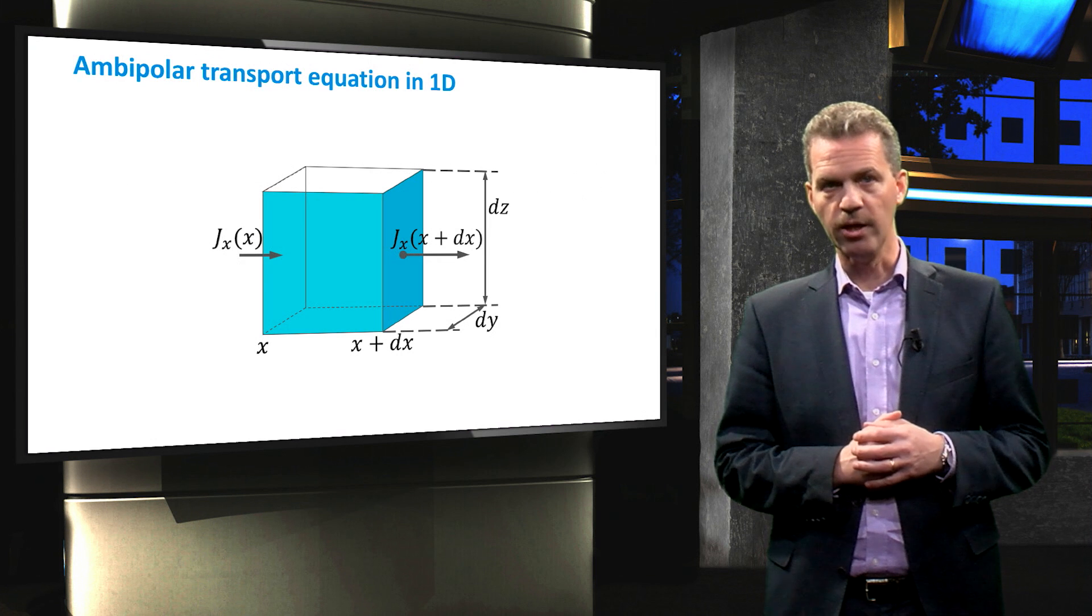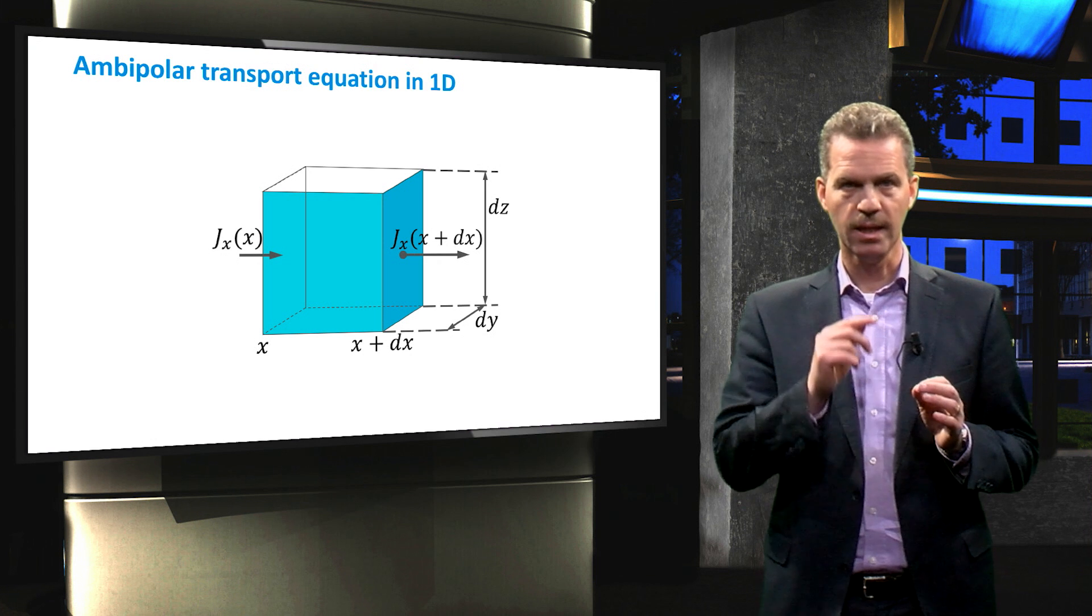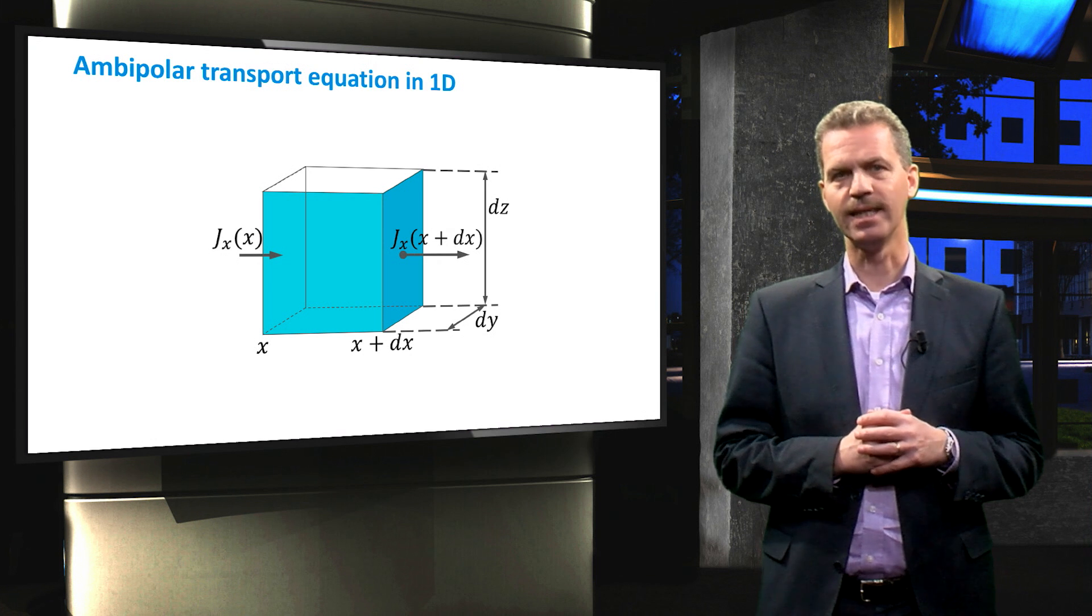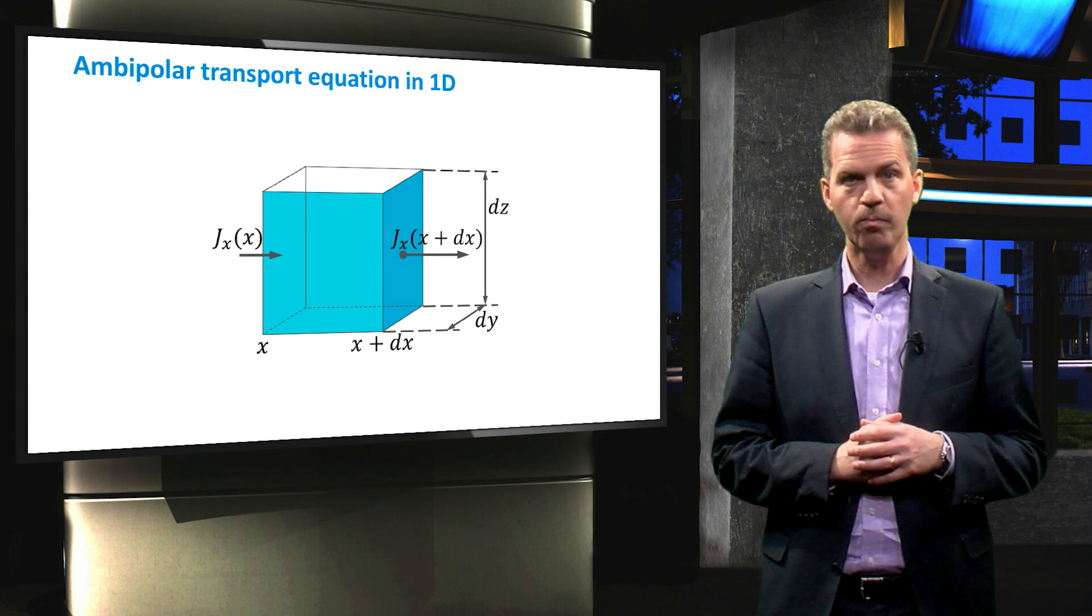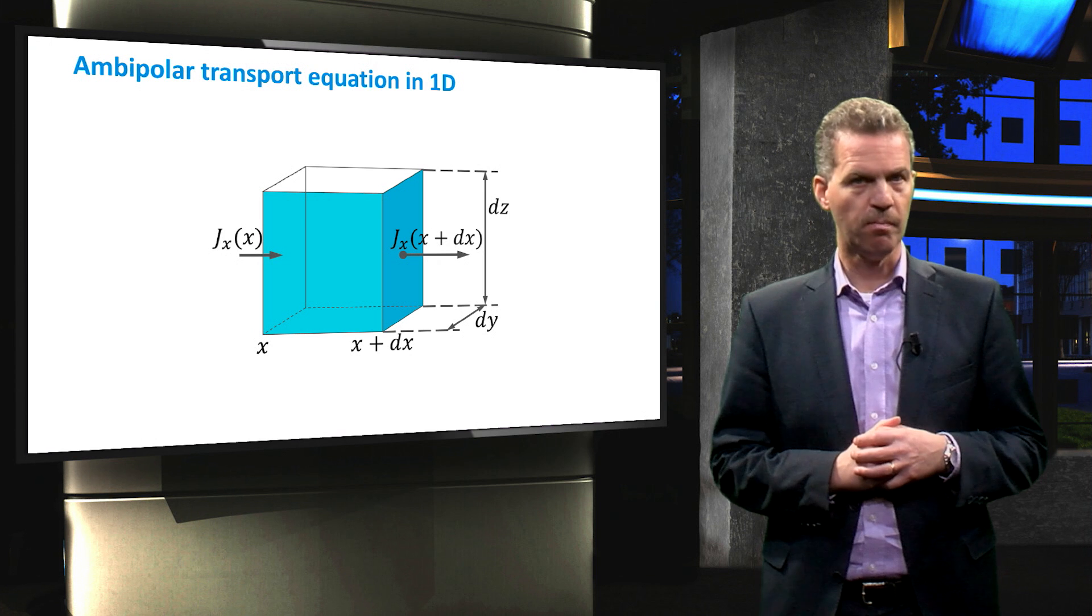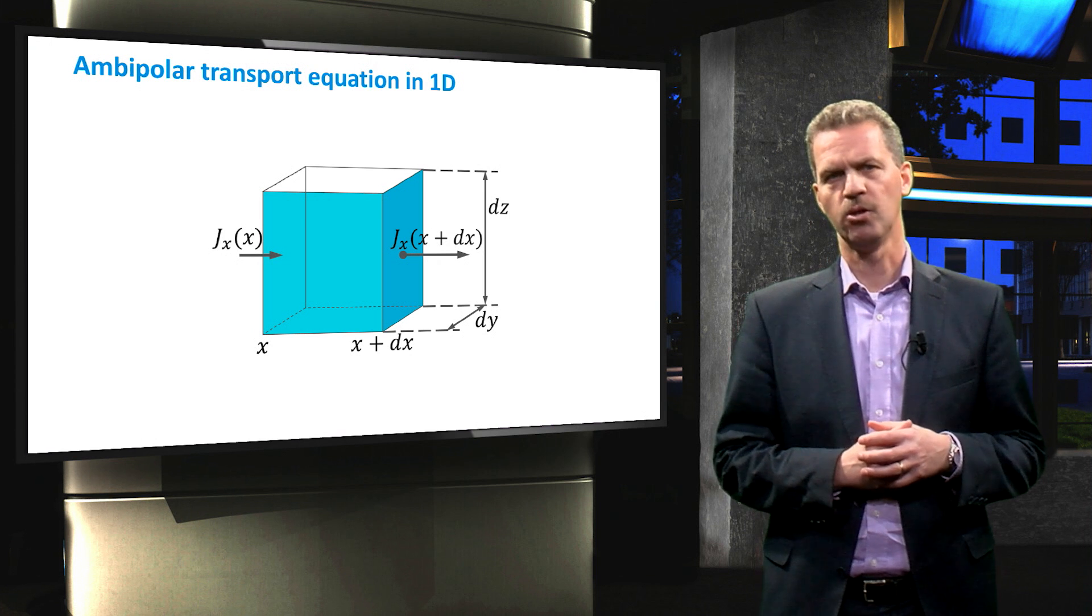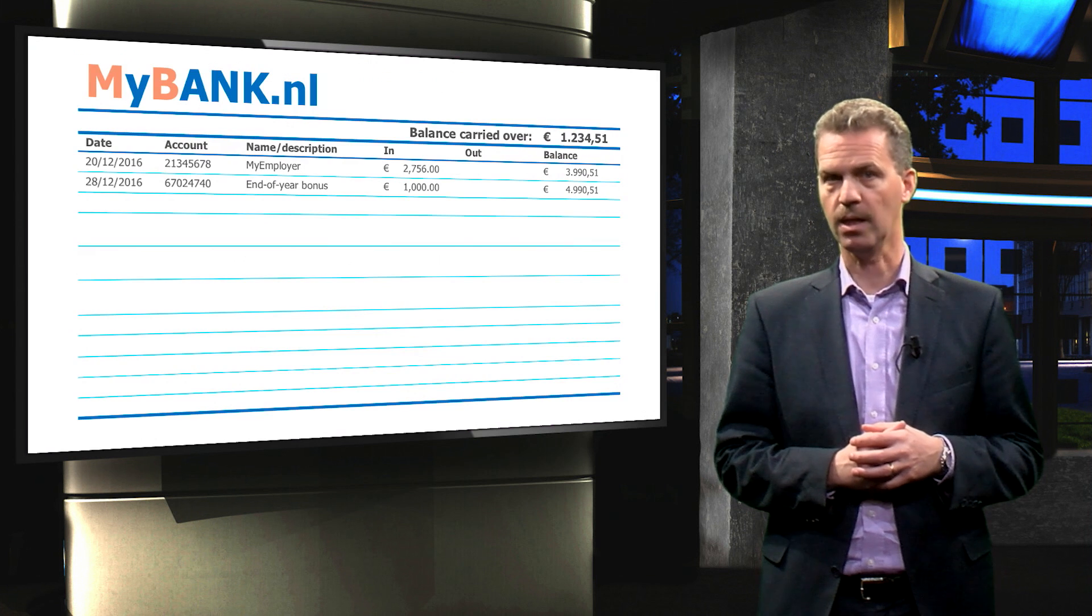In this slide, a volume element is shown of a semiconductor with the size of dx, dy and dz. The transport equation is in essence a way of bookkeeping of charge carriers. In our daily lives, many of us are familiar with bookkeeping. So, let's first see how that works by looking at a bank account.